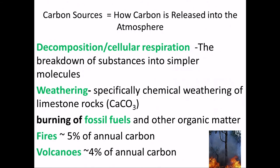Carbon sources are things that break carbon from something and put it back into the atmosphere. The biggest are cellular respiration and decomposition — animals eating plants breathe out carbon dioxide, and decomposers like fungi or bacteria break down living matter, leaves, and trees, releasing carbon dioxide back into the atmosphere. Other sources include chemical weathering of limestone rocks, burning of fossil fuels, regular fires, and even volcanoes.